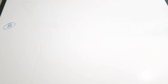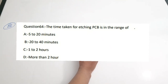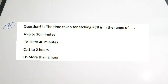Eighth question: for a PCB, the time taken for etching is in the range of — A) 5 to 10 minutes, B) 20 to 40 minutes, C) 1 to 2 hours, D) more than 2 hours. Etching is a process in PCB manufacturing. The correct answer is option A — it takes 5 to 20 minutes for etching of a PCB.